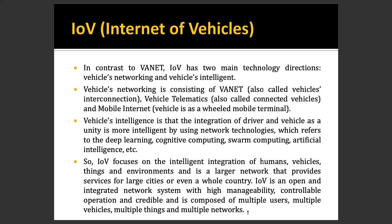IoV focuses on the intelligent integration of human, vehicle, things, and environment, and is a large network that provides service for large cities or even a whole country. IoV is an open and integrated network system with high manageability, controllable operation, and credibility. It is composed of multiple users, multiple vehicles, multiple things, and multiple networks — heterogeneous users, heterogeneous vehicles, different types of sensors, and multiple networks like V-Net, vehicle telemetry, or mobile network, all integrated together.